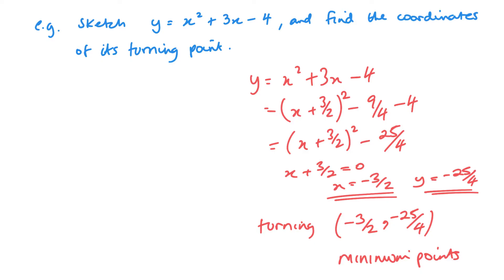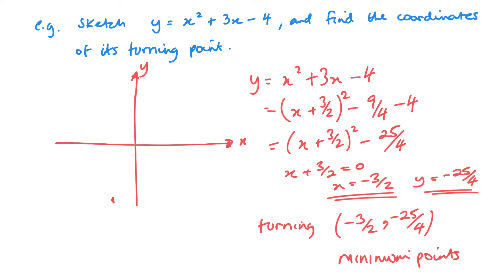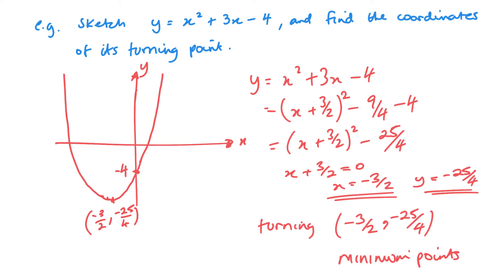Now let's have a look at the sketch - it doesn't have to be perfect, it's about the shape and the correct values. Minus 3/2 is -1.5, and 25/4 is 6.25, so we're putting a point down here as our minimum point. We know from the original equation that when x = 0, y = -4, so it crosses the y-axis at -4. We draw the curve coming down to that minimum point going back up, then mark all coordinates on the axes: the minimum point and the y-intercept.